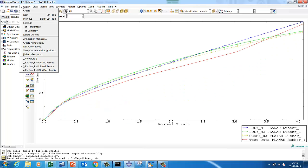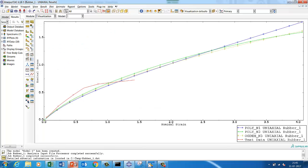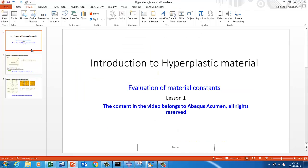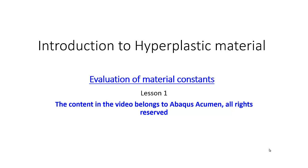We'll do it for biaxial, planar, and uniaxial results. Before going to that we'll quickly go through some of the basics. Once you understand this, it's not rocket science — it's just straightforward. We need to have a better understanding in terms of what equations people use and how we can evaluate those material models. This is Lesson One, based on the evaluation of material constants. Once you identify how to evaluate the material constants, the second step is you can build your rubber component and build the material model.